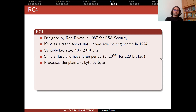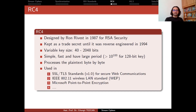RC4 processes the plaintext byte by byte. As we discussed before, not every stream cipher processes the plaintext bit by bit — it can be byte or blocks of data.